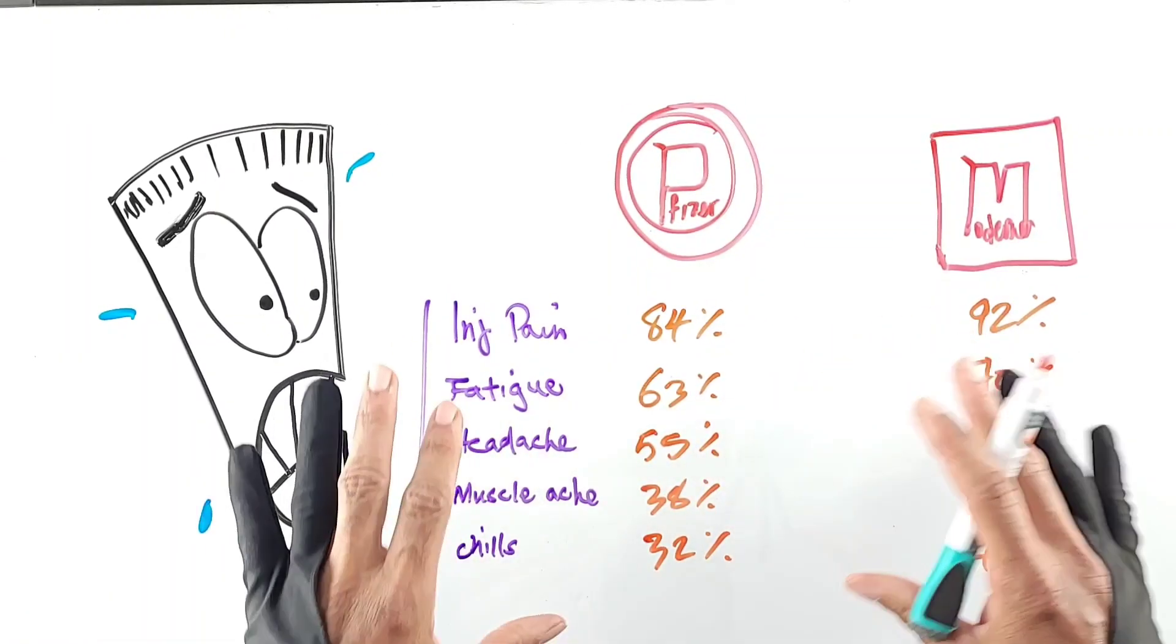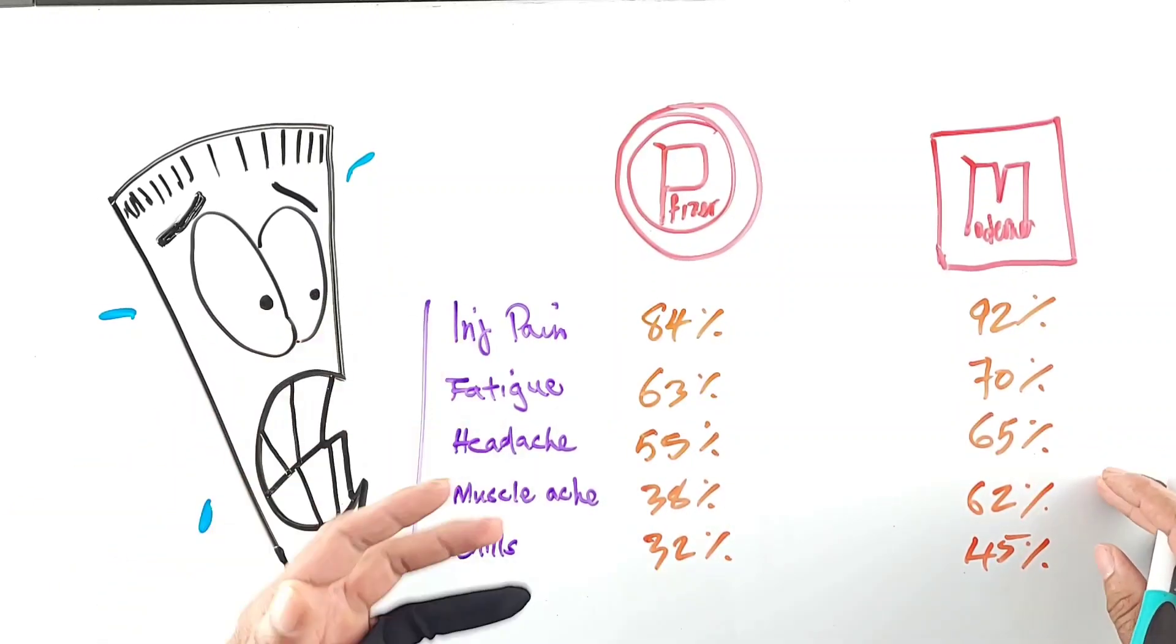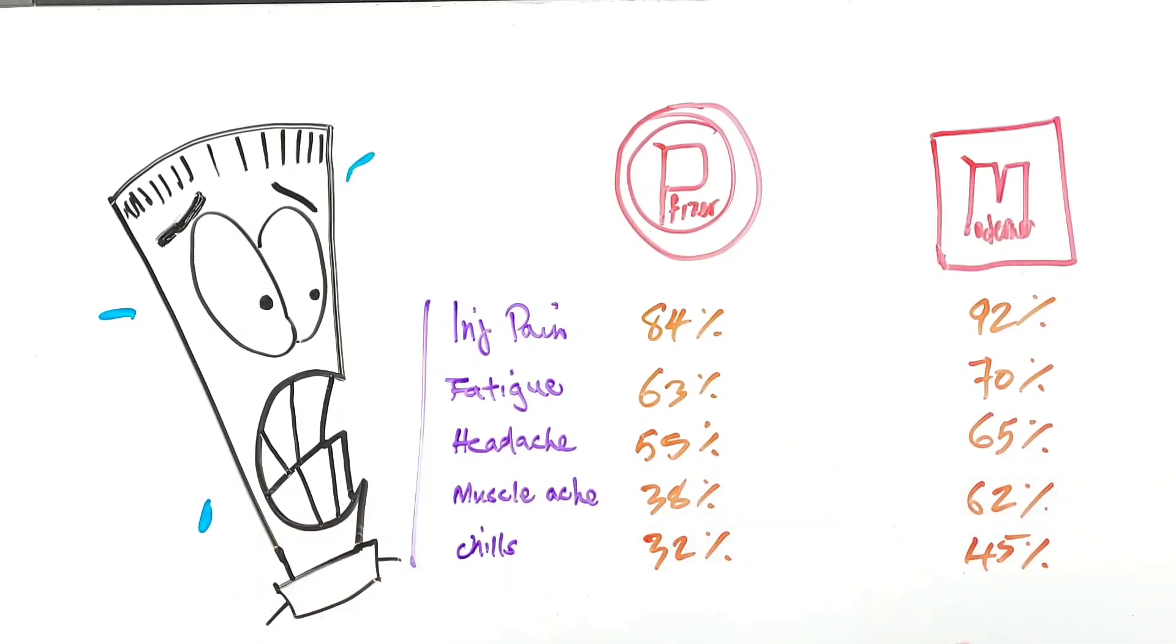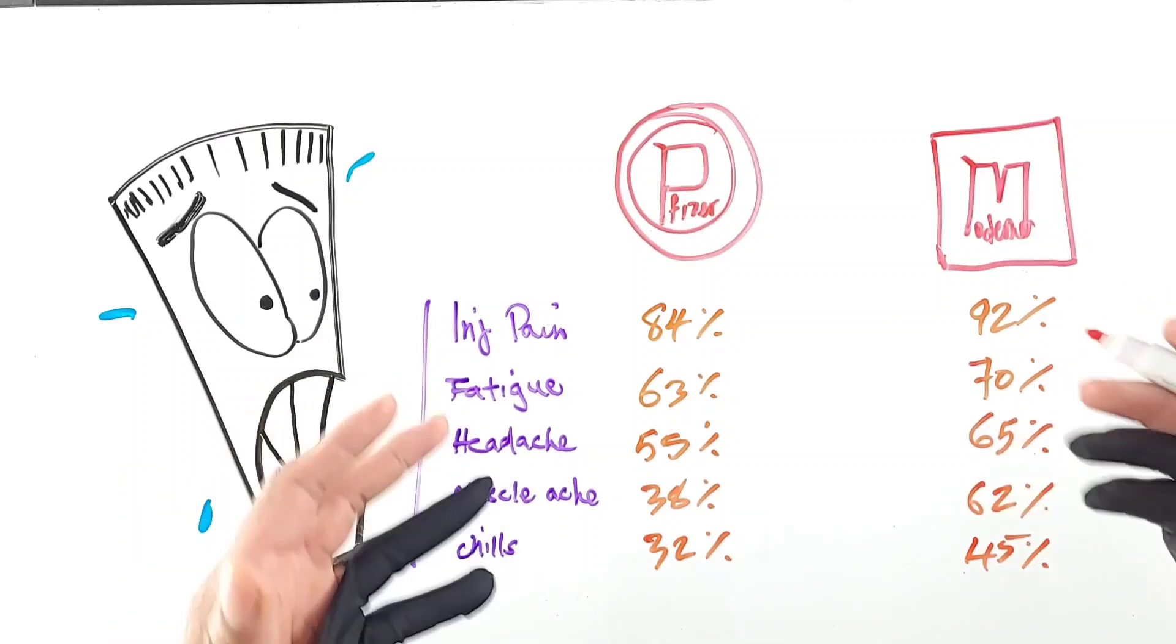There's no indication from these studies how intense each of these things was, just whether it was reported or not. So it is possible that even though there were more cases reported here, maybe they were more severe over here. We just don't know.